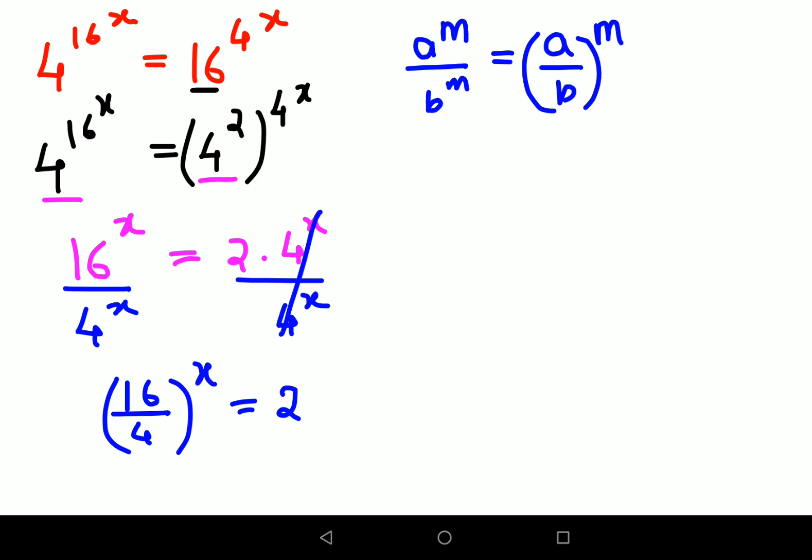So using the same logic, I can say this is canceling and becomes 4. So now I'm getting 4^x = 2.